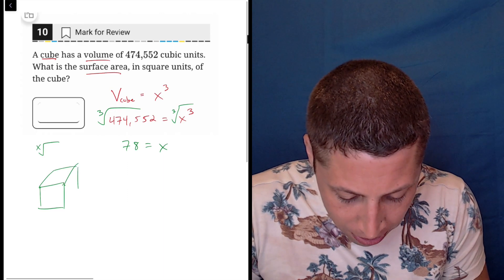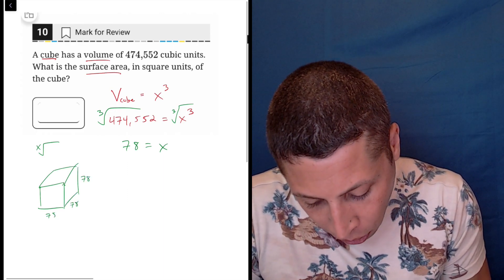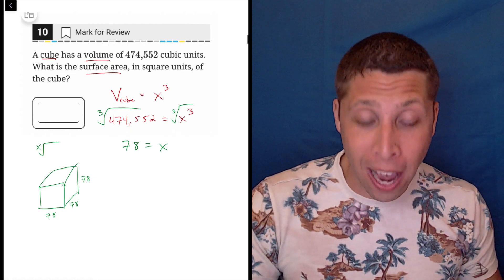So that nicely worked out. So 78 is x. Just to draw a quick cube, what does that mean? Well, that means that each side is 78. The length, the width, the height are all 78, and that's because a cube has the same measurement on each side.